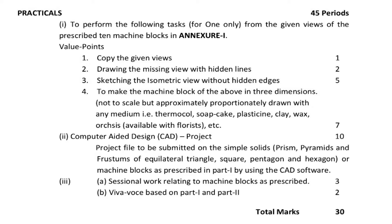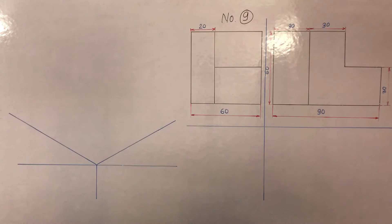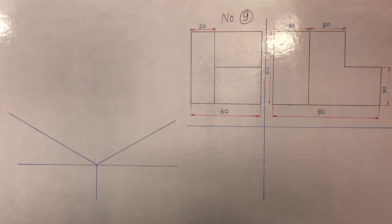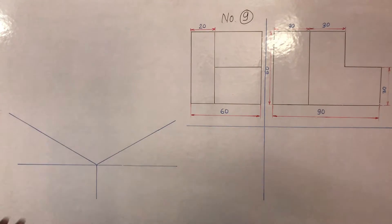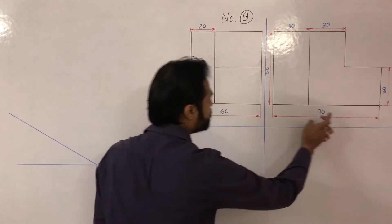In today's class we will solve practical problem number nine. In this problem, front view and side view — these two views — are given to us. Our task is first to copy the given views, which are already on the board, so please copy these two views in your sheet first. Then the second task is to draw the missing view with hidden lines, and then to sketch the isometric view without hidden lines.